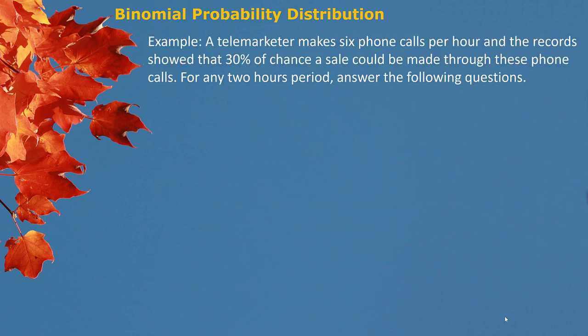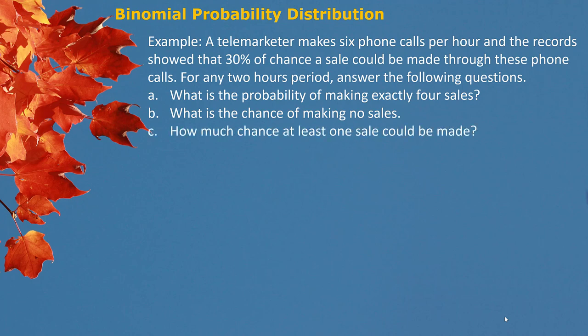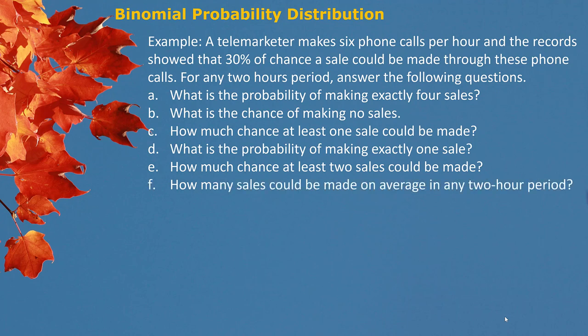Here is an example. A telemarketer makes six phone calls per hour, and records show a 30% chance a sale could be made through these phone calls. For any two-hour period, answer the following questions: What is the probability of making exactly four sales? What is the chance of making no sales? How much chance at least one sale could be made? What is the probability of making exactly one sale? How much chance at least two sales could be made? How many sales could be made on average in any two-hour period?